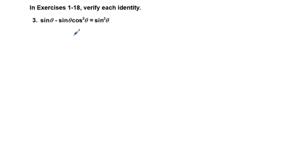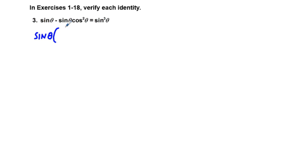Problem 3: sine theta minus sine theta cosine squared theta equals sine cubed theta. We're going to factor out the common factor from each of these two terms on the left side, which is sine theta. So we have sine theta times 1 minus cosine squared theta.